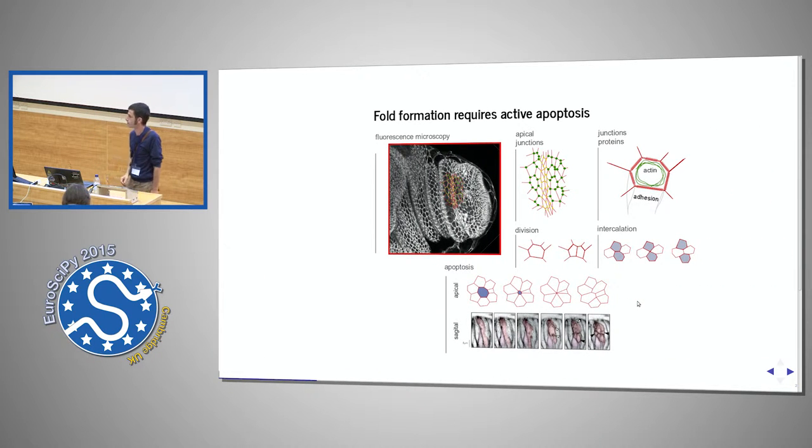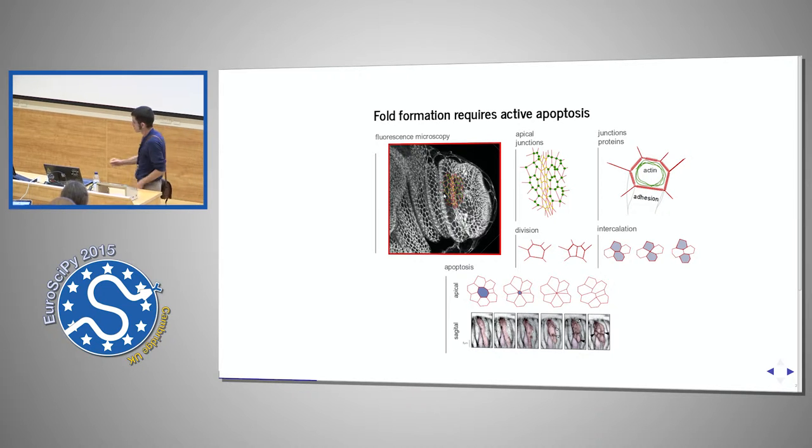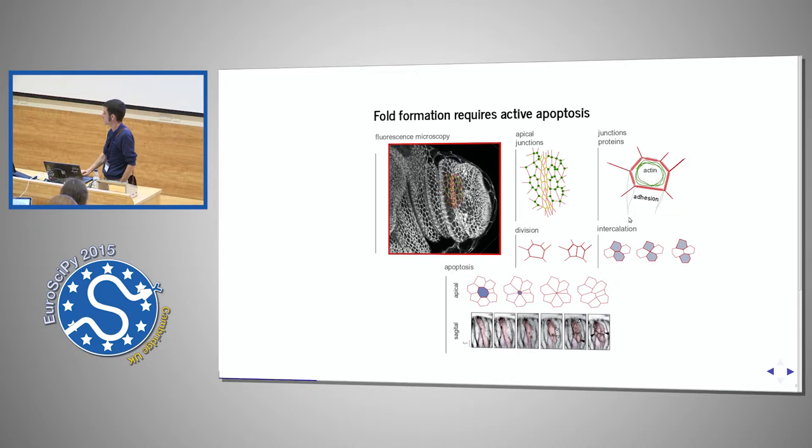So we can do fluorescence microscopy. And here is our leg disc, the sock. And you see that the cells form a meshing, a network, which is called the apical junctions. So each of those cells here are actual living cells.